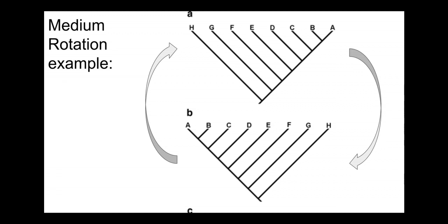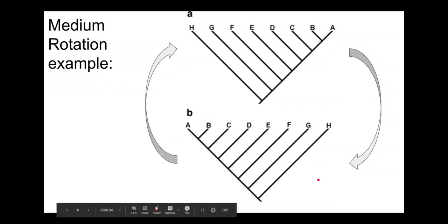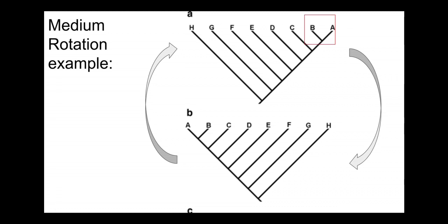Here's a slightly harder rotation example because there's a lot of taxa involved. How do we transfer from this tree here to that tree? Which node or nodes do we have to rotate on? Pause the video and think about that for a second. Take a look here - we've got A and B on the right hand side and then A and B on the left hand side there. And look at the order of all of the letters. Pause the video.